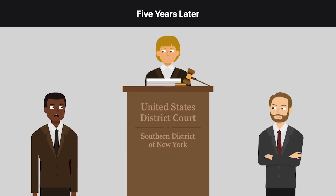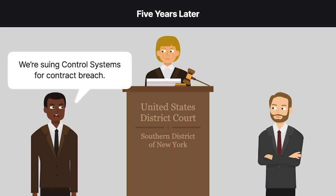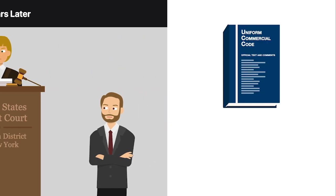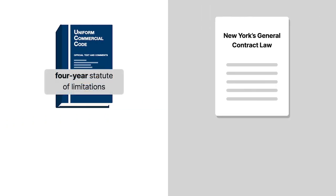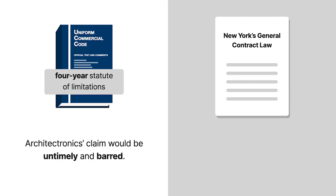Five years later, Architectronics sued Control Systems for contract breach in federal district court. If the UCC, which carries a four-year statute of limitations, applied to the agreement, then Architectronics' claim would have been untimely and barred.